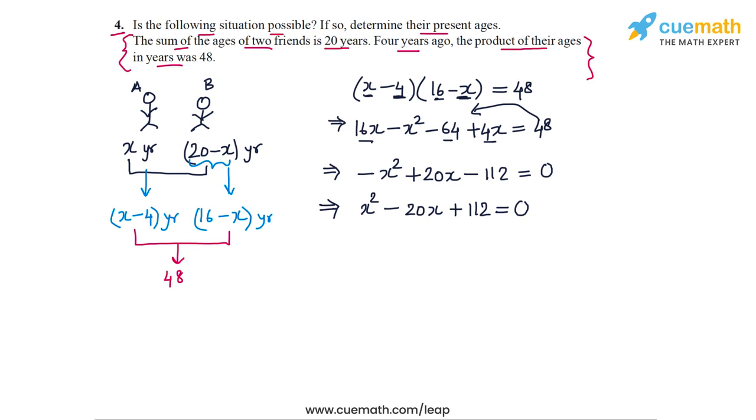Now to check whether this equation has real roots or not, we can check its discriminant. So the coefficients of this equation are a equal to 1, b equal to minus 20, and c is equal to 112.